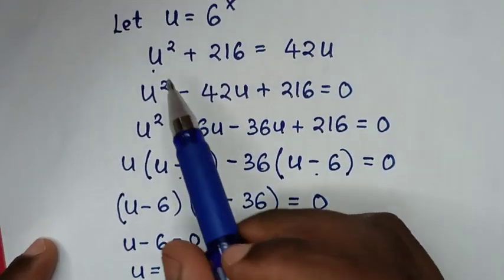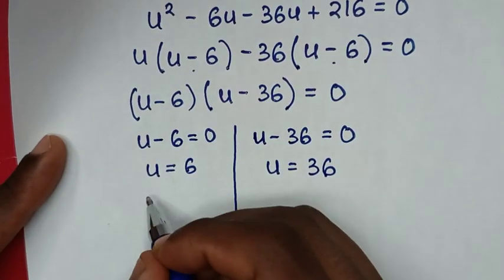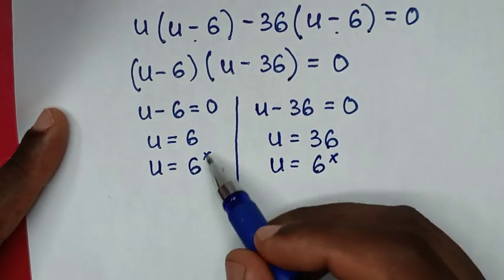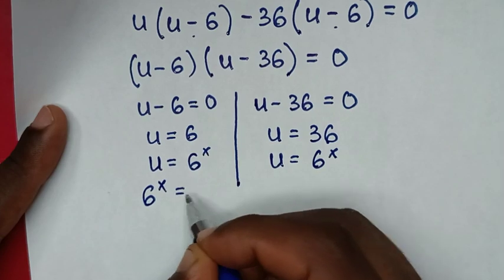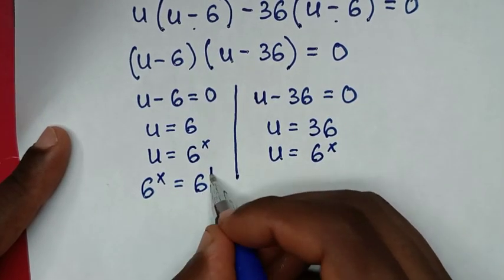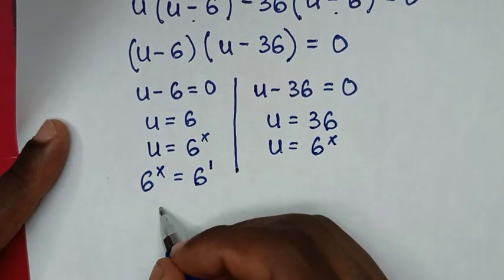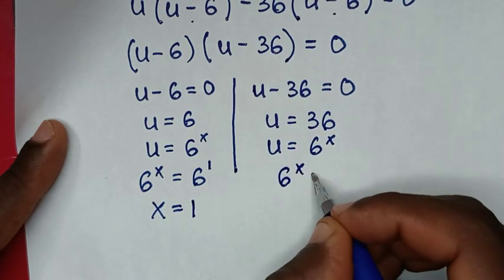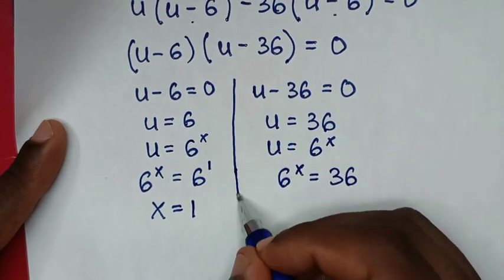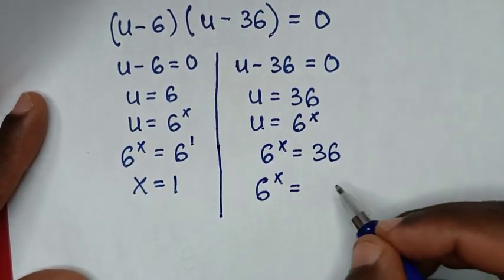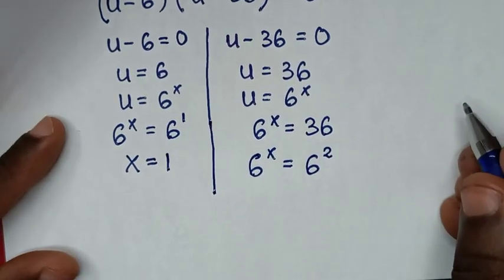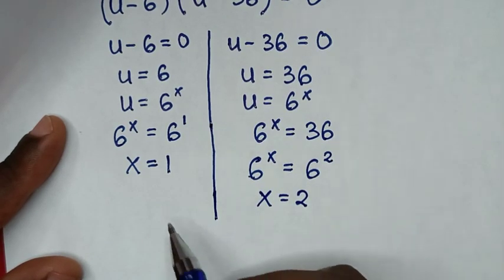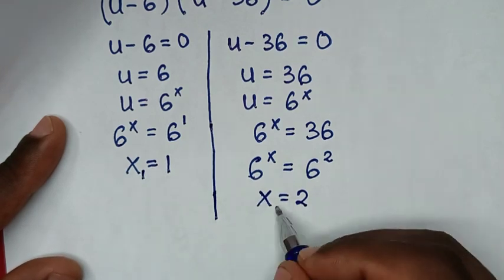Recalling that u is equal to 6 power x, we compare the two cases. For u equals 6: 6 power x is equal to 6, which is 6 power 1, so x is equal to 1. For u equals 36: 6 power x is equal to 36, which is 6 squared, so x is equal to 2. We now have two values of x: x equals 1 and x equals 2.